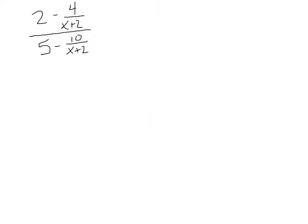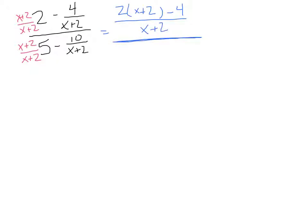Here we have another fraction within a fraction. I'm going to do it the same way — simplifying the top, simplifying the bottom, and then carrying out the problem. If I look at the top, I have x plus 2 as my common denominator, so I need to multiply 2 by (x plus 2) over (x plus 2). The bottom also has that denominator of x plus 2, so I'm going to multiply 5 by (x plus 2) over (x plus 2). When we carry out this common denominator work, we have 2 times (x plus 2) minus 4, all over (x plus 2), divided by 5 times (x plus 2) minus 10, over (x plus 2).